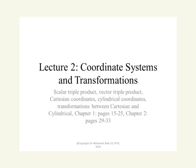Welcome to the second lecture of 2FH3. We'll discuss in this lecture a number of important products we'll see very often in electromagnetics: the scalar triple product, the vector triple product, and we'll also move to discuss the cylindrical coordinate systems, including transformation between coordinates and unit vectors. This lecture will cover chapter 1, pages 15-25, and chapter 2, pages 29-33.